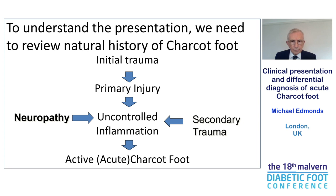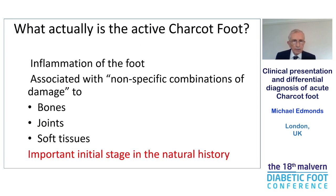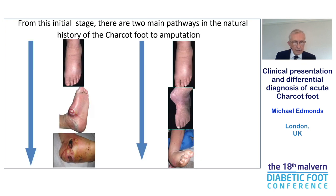The other cause is related to the secondary trauma from continued ambulation because of the sensory neuropathy. And this uncontrolled inflammation constitutes the active, acute Charcot foot. The active Charcot foot is inflammation of the foot associated with non-specific combinations of damage to bones, joints, and soft tissues. This is an important initial stage in the natural history.